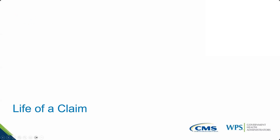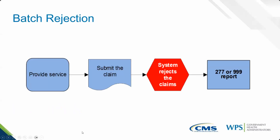To fully understand rejections and denials, it is important to recognize the path that a claim takes, or what we sometimes refer to as the life of a claim. This is really a simplified graphic on how a claim gets into our system. The service is provided, a claim is submitted, and sometimes the system rejects those claims, and when that occurs, a 277 or a 999 report is generated to explain why.